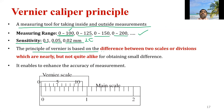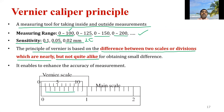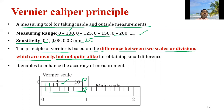In the vernier principle, 10 vernier scale divisions equal 9 main scale divisions — that is, N vernier scale divisions equals N minus 1 main scale divisions. One vernier scale division equals (N−1)/N main scale divisions. The least count is: 1 MSD minus 1 VSD, which simplifies to 1 MSD / N. Since 1 main scale division equals 1 mm, the least count equals 1/N mm. This small difference between coinciding divisions enables enhanced measurement accuracy and is called the least count of the vernier calipers.